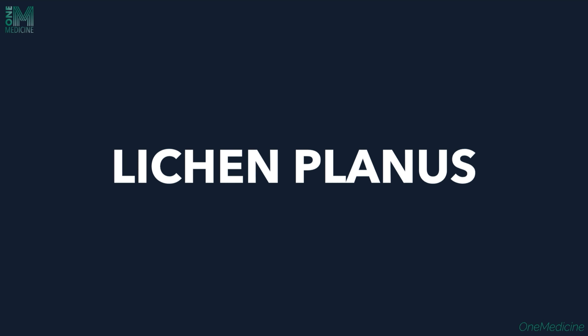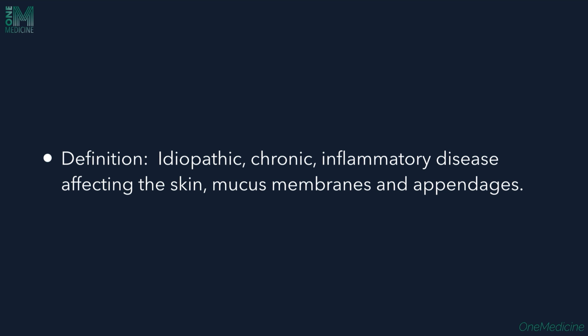Lichen Planus. The definition of Lichen Planus goes like this: it is an idiopathic chronic inflammatory disease affecting the skin, mucous membranes and the appendages. So it's a chronic inflammatory disease affecting these structures.